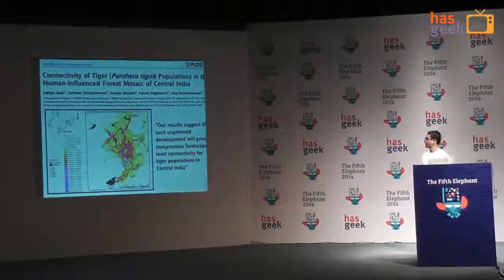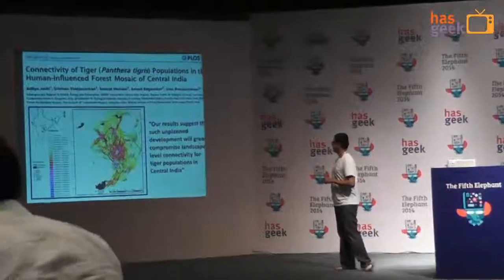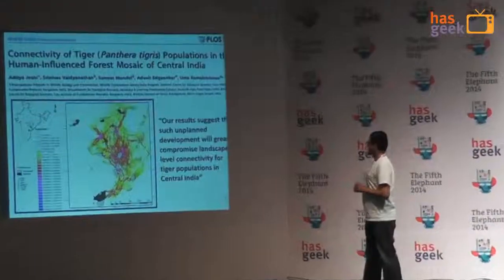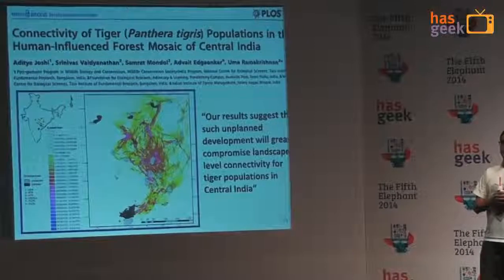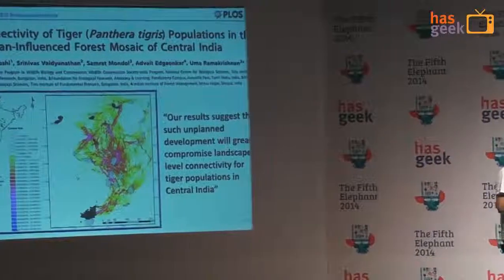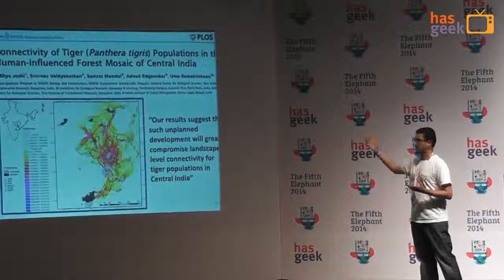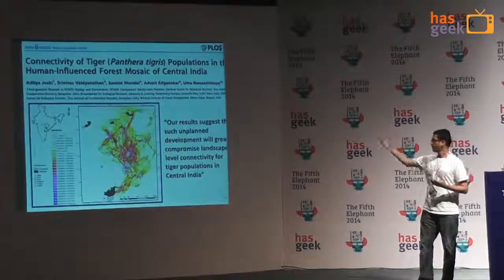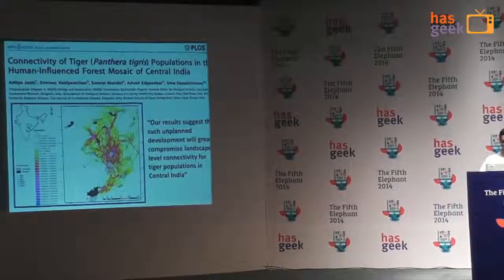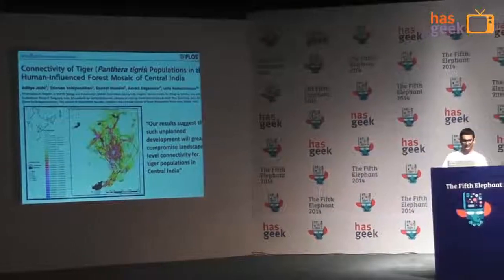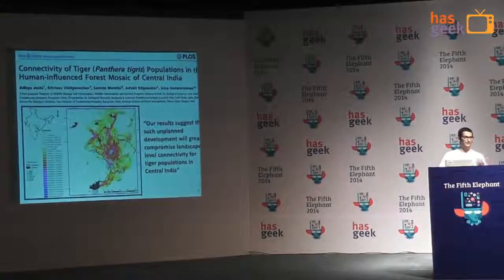As the paper concludes, their results suggest that unplanned development will greatly compromise landscape-level connectivity for tiger populations in central India. Tiger populations are stable and healthy now, but unless we start thinking about conservation more systematically — which tools like Circuitscape make possible — we will start seeing negative effects.